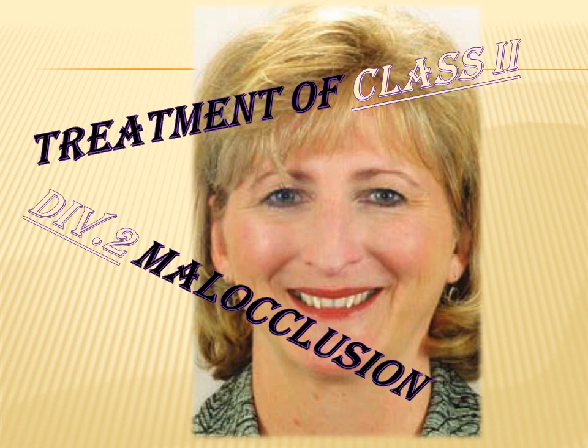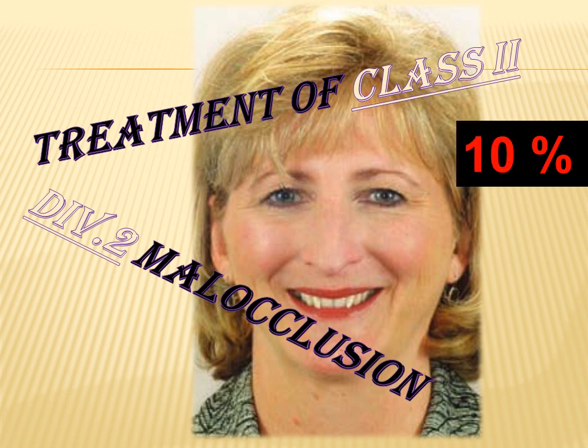Class 2 Division 2 Malocclusion is the second most common type of Class 2 Malocclusion, assessed in the anterior-posterior plane of the dentition. Such malocclusion constitutes about 10% of the population. There are different features and etiological factors that contribute to this type, which are somewhat different from Class 2 Division 1 Malocclusion.